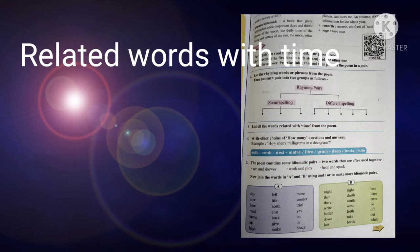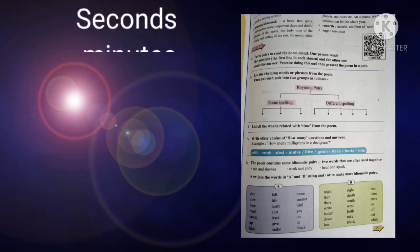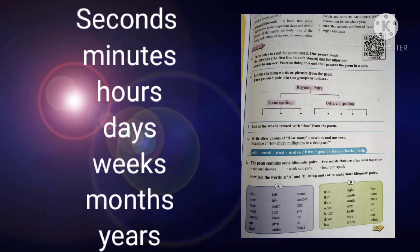Did you understand? Now question number three: list all the words related with time from the poem. Which words related with time? First of all, you know time words, for example: second, then minute, then hour, then day, then week, then month, then year. So these are the words.